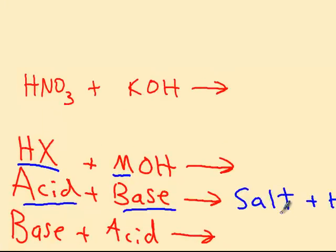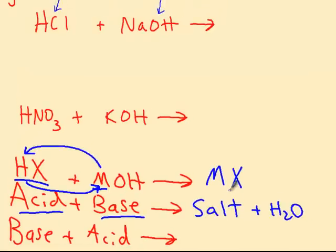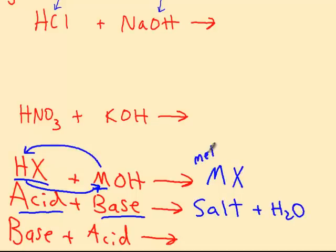All right, so look at our general formulas here. HX plus MOH. Now what's going to happen in the double replacement is the positive ions are going to switch partners. So M is going to knock hydrogen out of the way, and hydrogen is going to come back over here and go with OH. So the formula for the salt is MX, which is from our general forms before, the metal from the hydroxide, so from the base, and the anion, or the negative ion, from the acid. So you could say the cation and the anion, so MX.